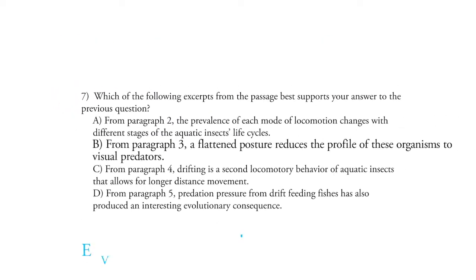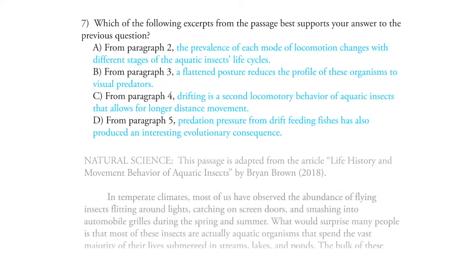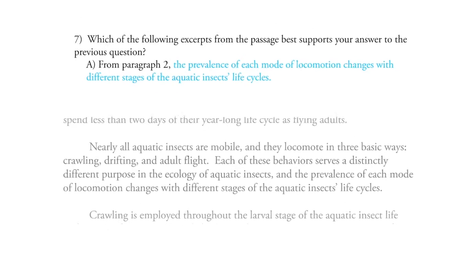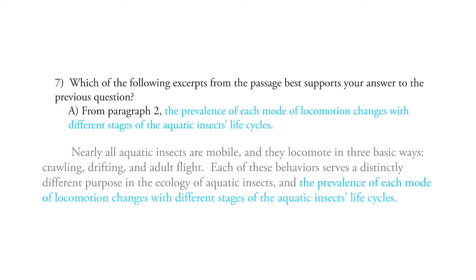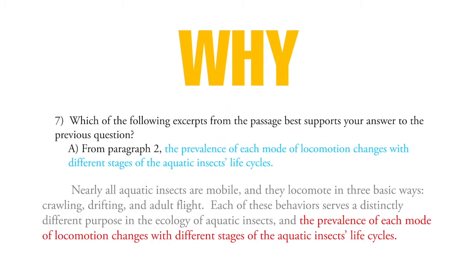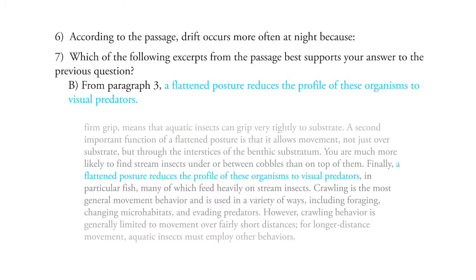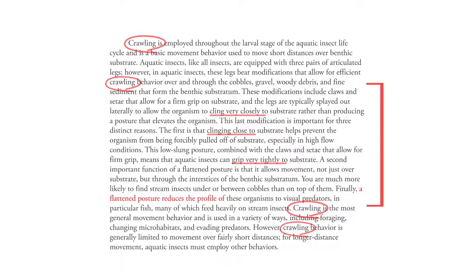Let's look at the answer choices for the evidence support question. But instead of just reading the excerpt that's given, we're going to look at its placement in the passage as a whole. Starting with choice A — it comes from the very short paragraph 2, which describes how aquatic insects move. This is far too general and does not answer the question as to why insects drift more at night, so choice A is wrong. Looking at choice B, it's in paragraph 3, and this is wrong because that whole paragraph is about crawling, not drifting. So choice B is out.